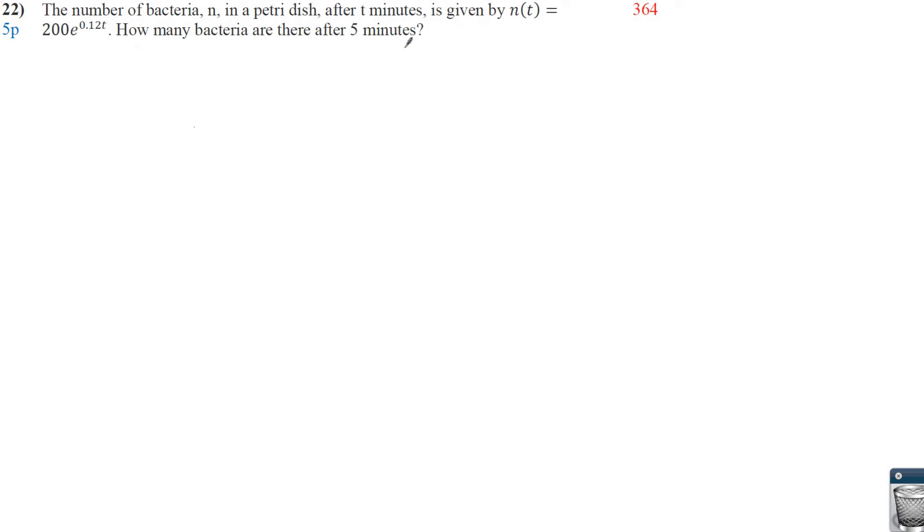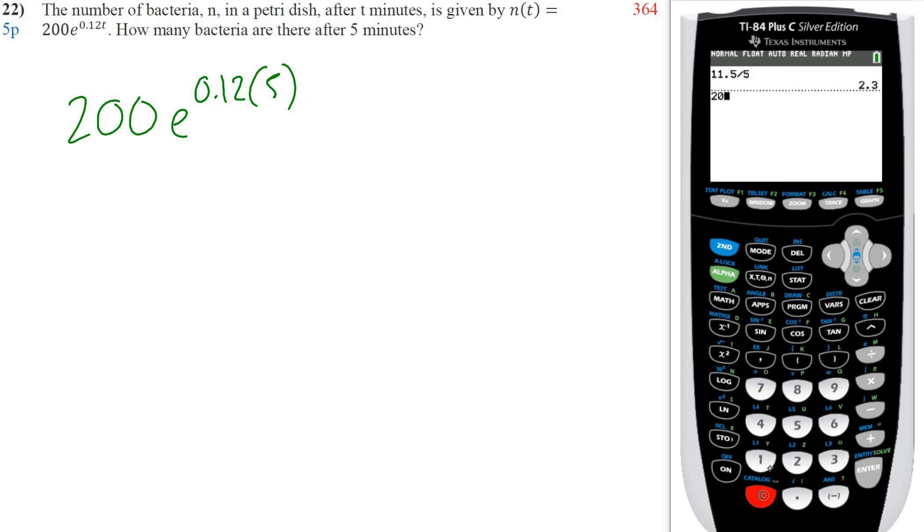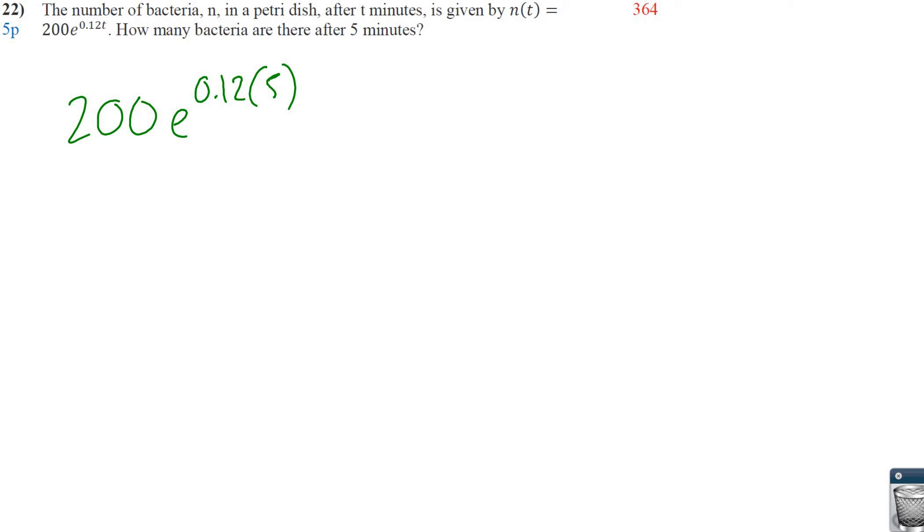22. So hopefully you remember this. This was in your homework. Literally pulled it from your homework. Just changed the numbers. So how much bacteria is there after 5 minutes? Literally just knowing how to plug it in. We're doing 200 times e to the 0.12 times 5. So 200 times 2nd ln gets us our e. So 0.12 times 5. There's our answer. 364. Again, if you're doing three significant figures, those are the three first digits rounded.